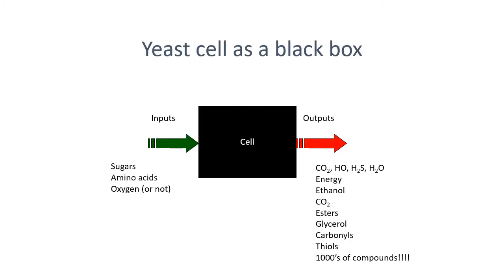What is fermentation in a more global sense? If we think of a yeast cell as a little black box, it has inputs: some sugar, some amino acids, maybe some oxygen. And then the outputs are tremendous — CO2, hydrogen peroxide, hydrogen sulfide, water, energy and heat, ethanol, carbon dioxide, esters, glycerol, carbonyl compounds, and thiols — both the positive passion fruit and guava aromas and the negative hydrogen sulfide sense. Yeast produce literally thousands of compounds, turning a fairly simple input list into a very complex beverage.